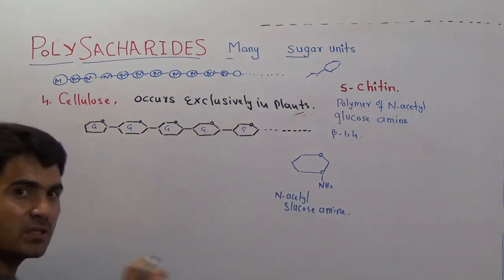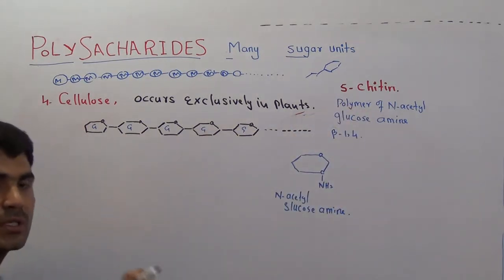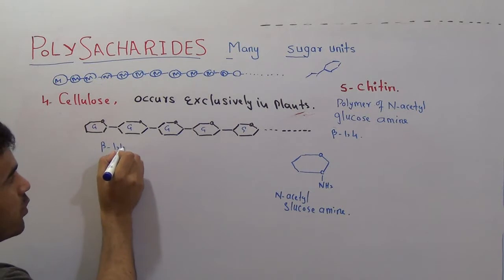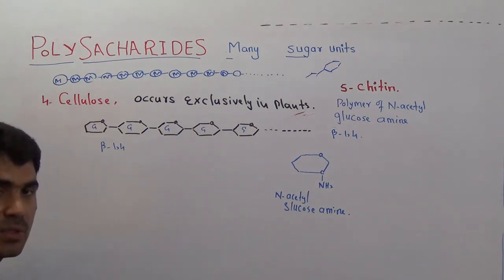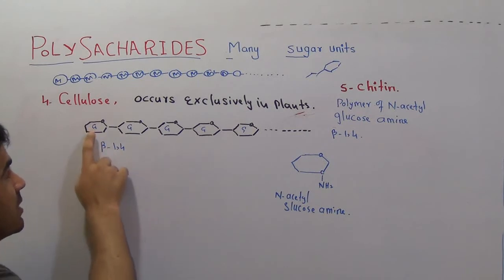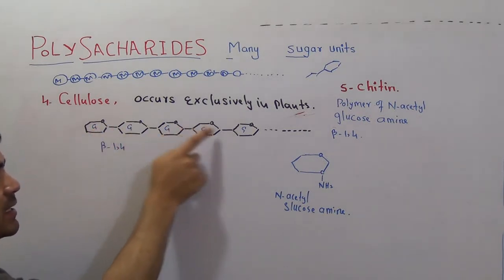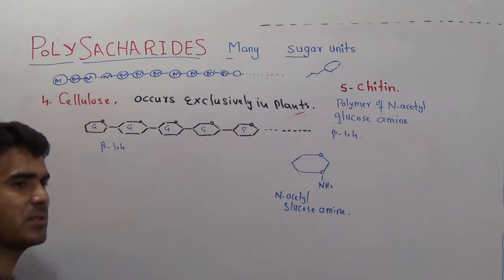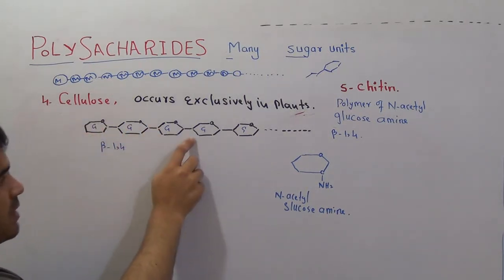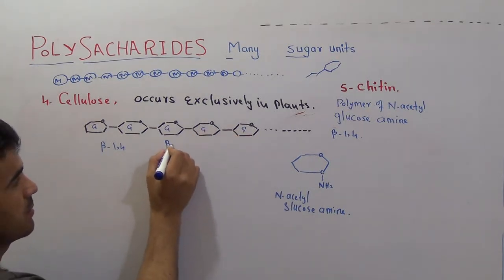The difference between cellulose and starch or glycogen is the bond. There is a beta 1,4 linkage in cellulose, compared to starch and glycogen where we saw alpha 1,4 linkage. It is beta because every sugar in cellulose is a beta sugar. You know sugars come in two types — alpha and beta — so beta glucose, beta glucose, each unit is beta glucose.